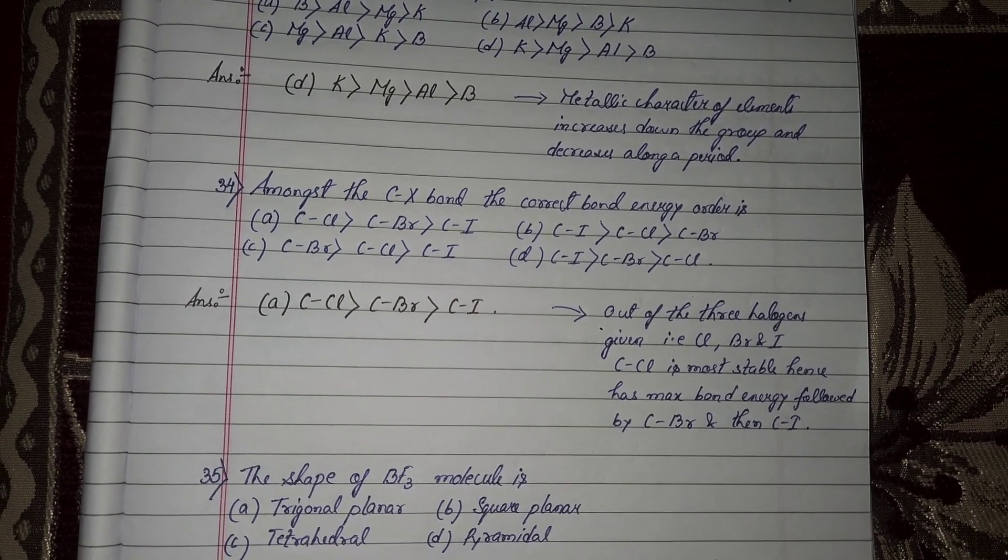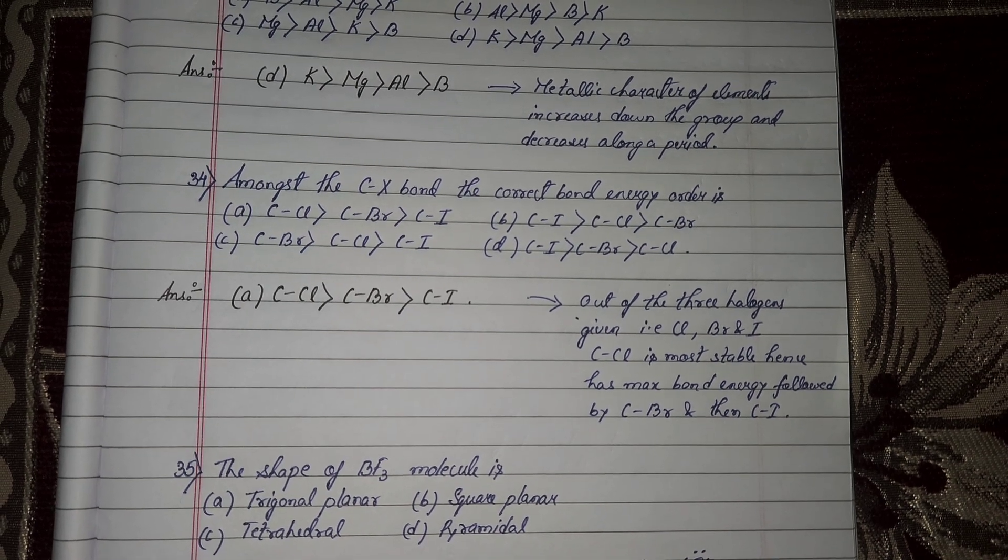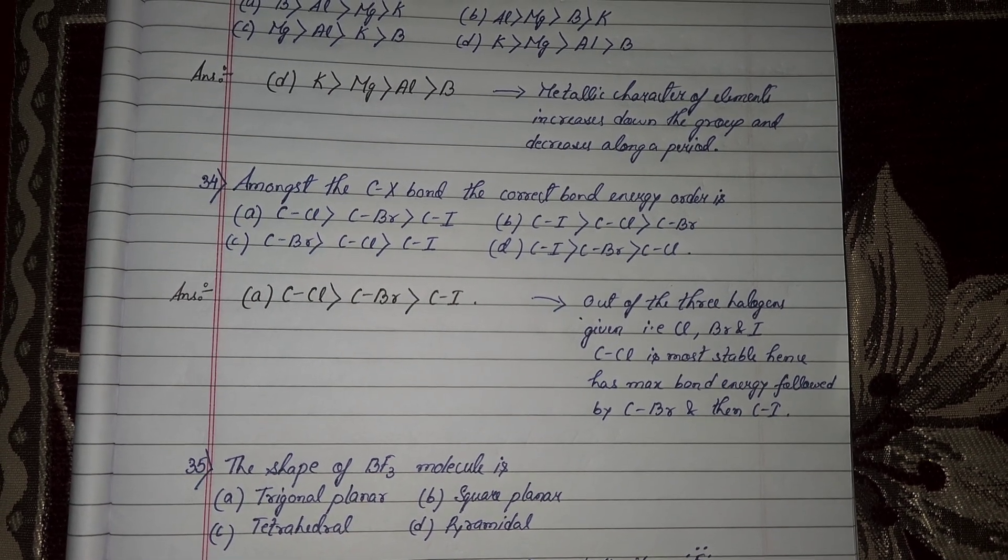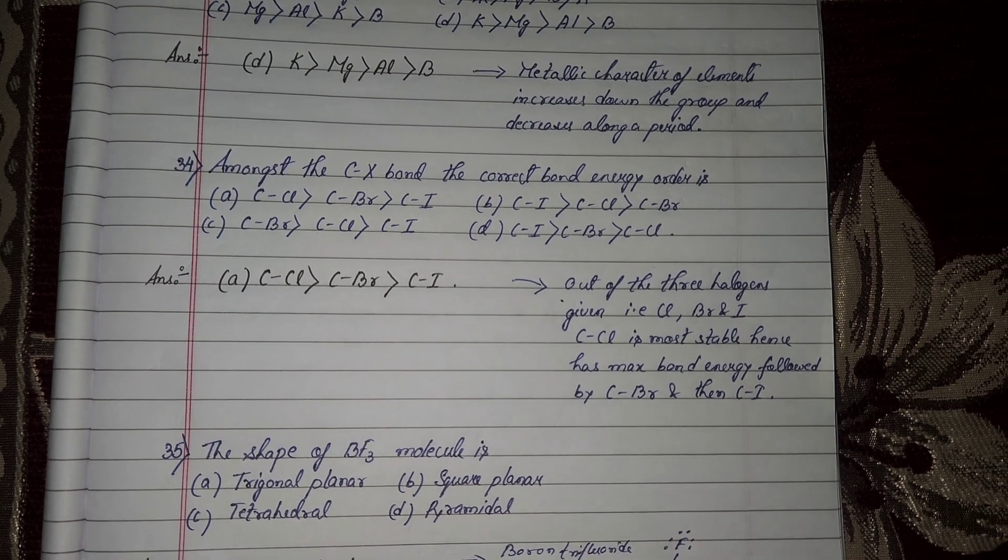Next question number 34, amongst the carbon halogen bond, the correct bond energy order is option number A, carbon chlorine greater than carbon bromine greater than carbon iodine.